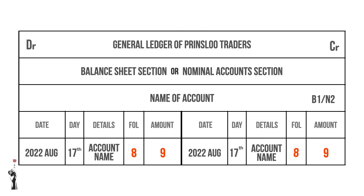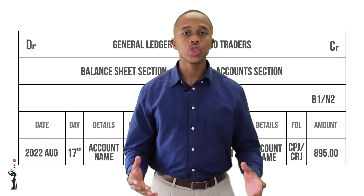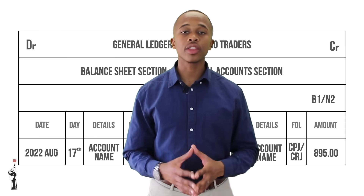You should also record the name of the other half of the double entry account, the folio number of the journal from which the transaction has been transferred, and lastly the amount or value of the transaction.